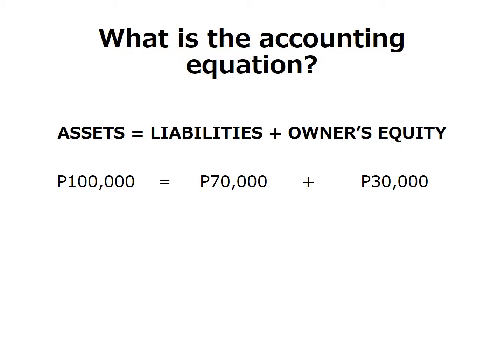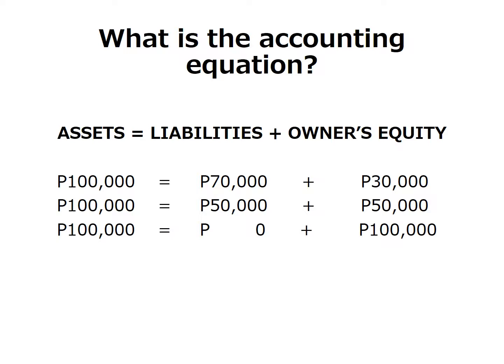For example, assets of 100,000 pesos equals liabilities of 70,000 pesos plus owner's equity of 30,000 pesos. Or assets of 100,000 pesos equals liabilities of 50,000 pesos plus owner's equity of 50,000 pesos. Or assets of 100,000 pesos with liabilities of 0 and owner's equity of 100,000 pesos. It doesn't matter how the amounts are distributed as long as the two sides are equal — the left side (assets) equals the right side (liabilities and owner's equity).